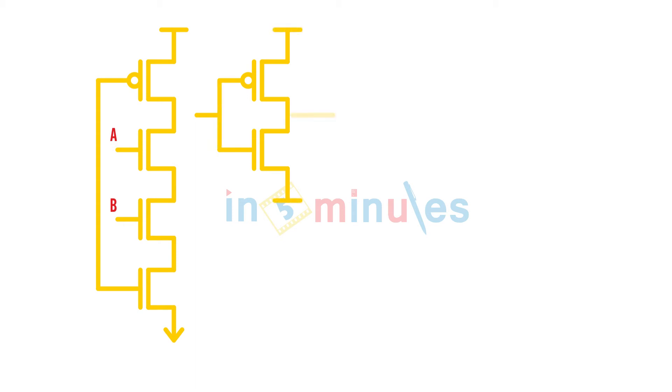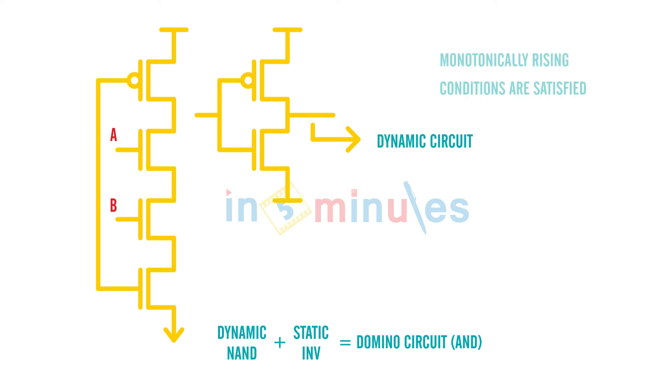And this block now can drive—this is dynamic NAND plus static inverter together. This is called domino circuits, or domino NAND. Now this block can drive, or this output can drive, a dynamic circuit because it will ensure that the monotonically rising conditions are satisfied.